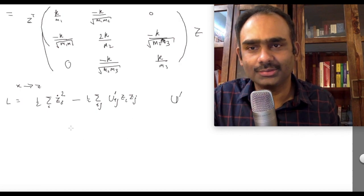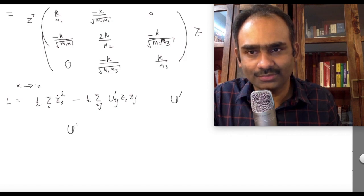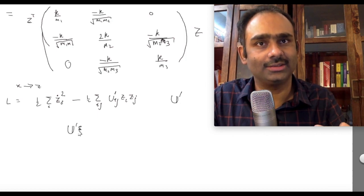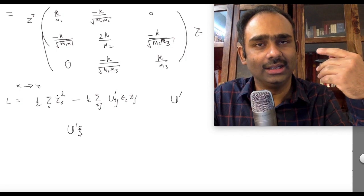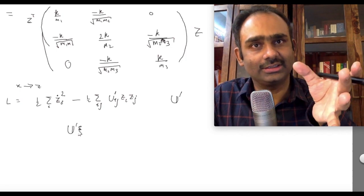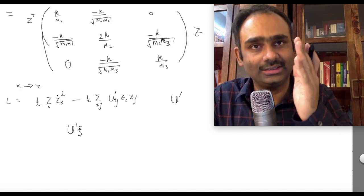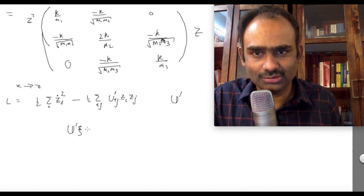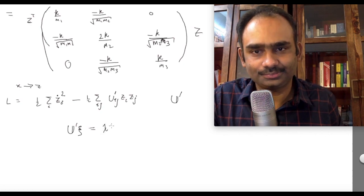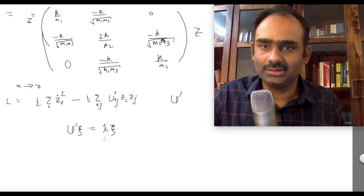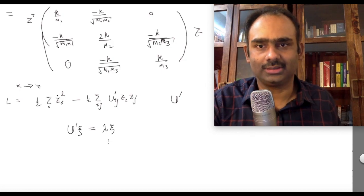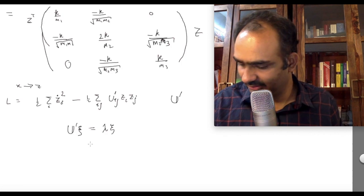Now the last step: I do one more transformation and go from z to capital Q's, under which U-prime will get diagonalized — become a sum of squares. When that happens, the kinetic term will go over to sum q_i-dot squared, because the transformation that diagonalizes U-prime will be an orthogonal transformation, and under that the kinetic sum of squares will still remain a sum of squares. To do this, we search for the eigenvalues of the matrix U-prime. We find the eigenvalues and construct the diagonalizing matrix by putting the eigenvectors as column vectors.